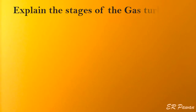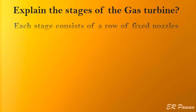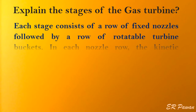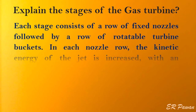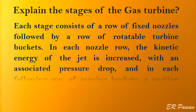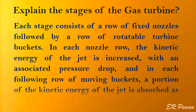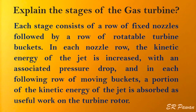Explain the stages of the gas turbine. Each stage consists of a row of fixed nozzles followed by a row of rotatable turbine buckets. In each nozzle row the kinetic energy of the jet is increased with an associated pressure drop, and in each following row of moving buckets, a portion of the kinetic energy of the jet is absorbed as useful work on the turbine rotor.